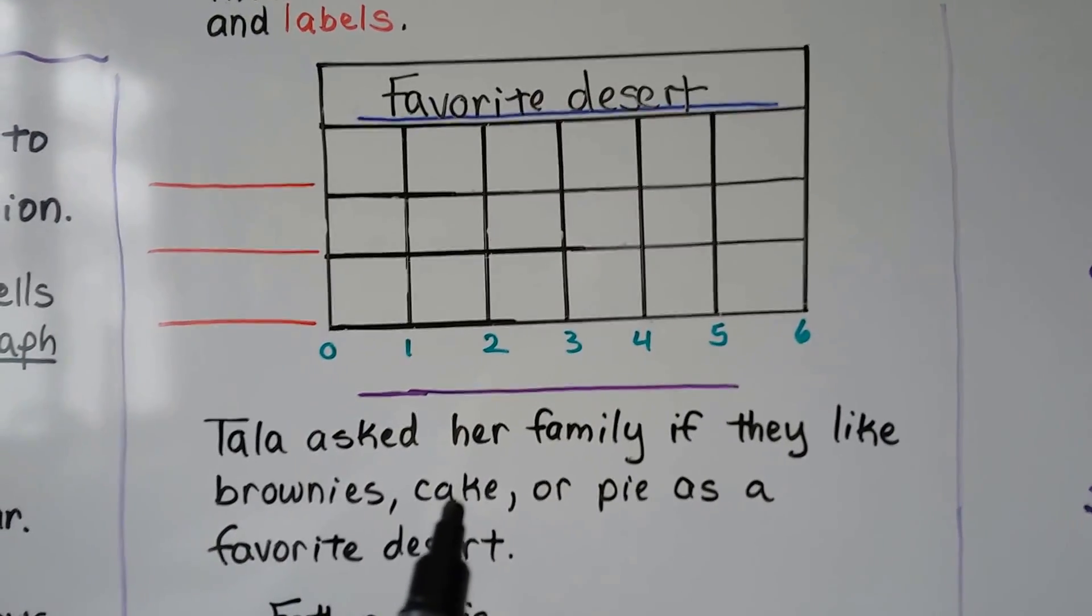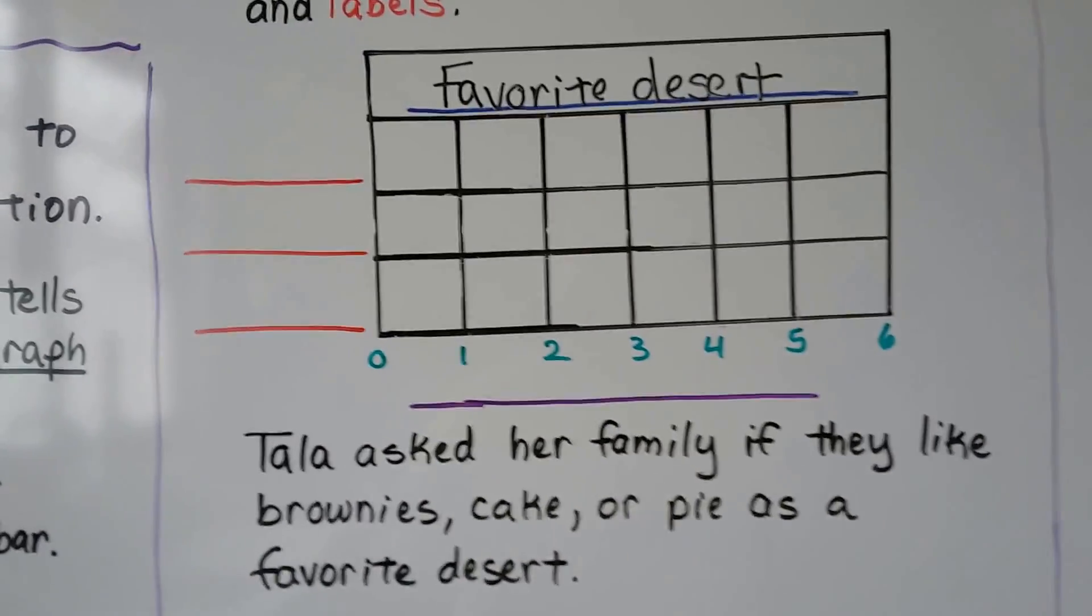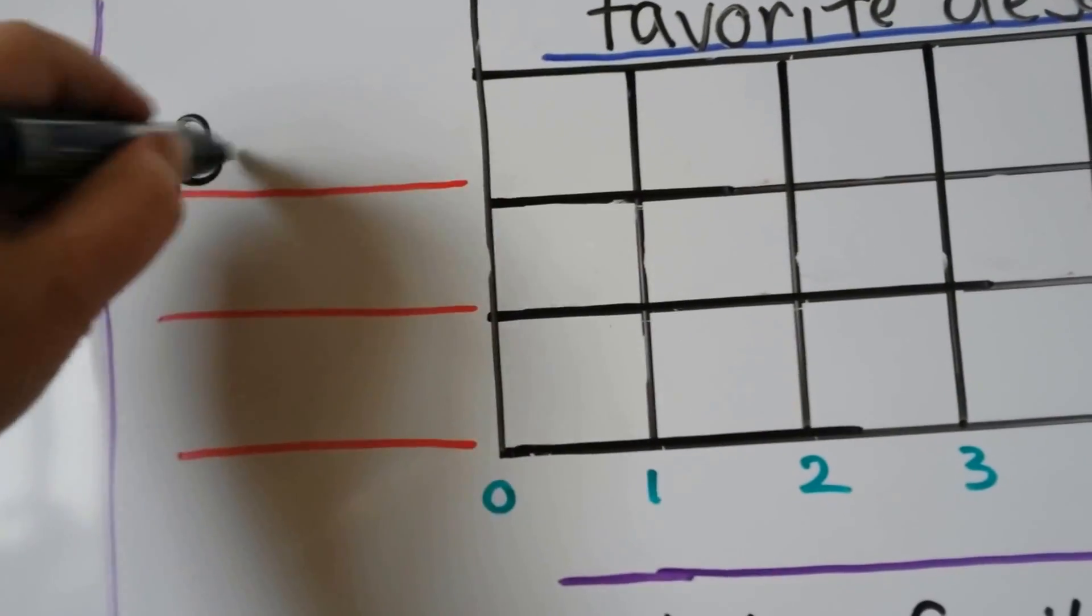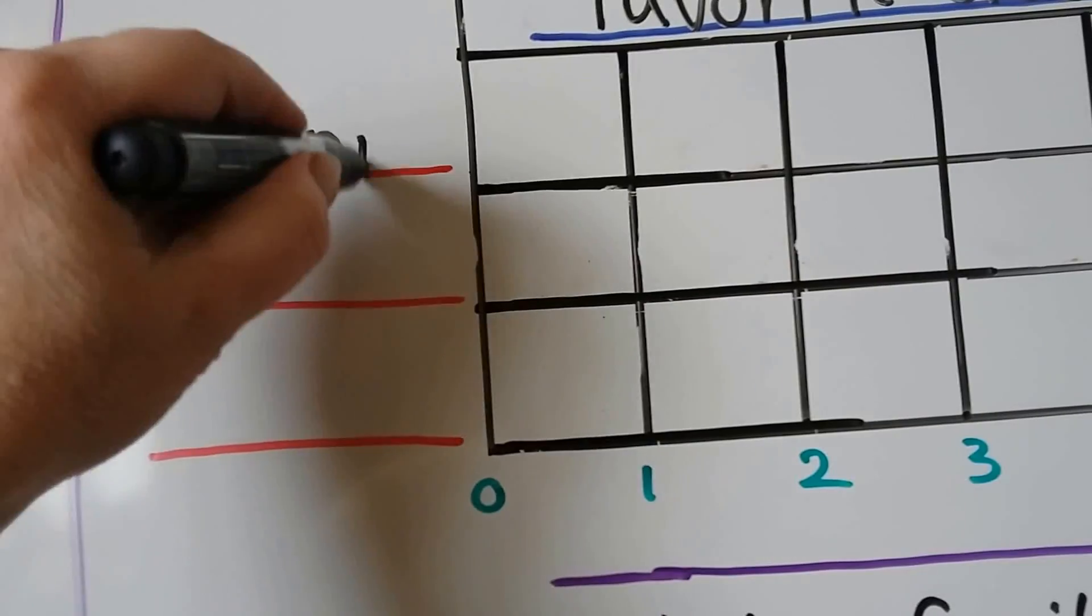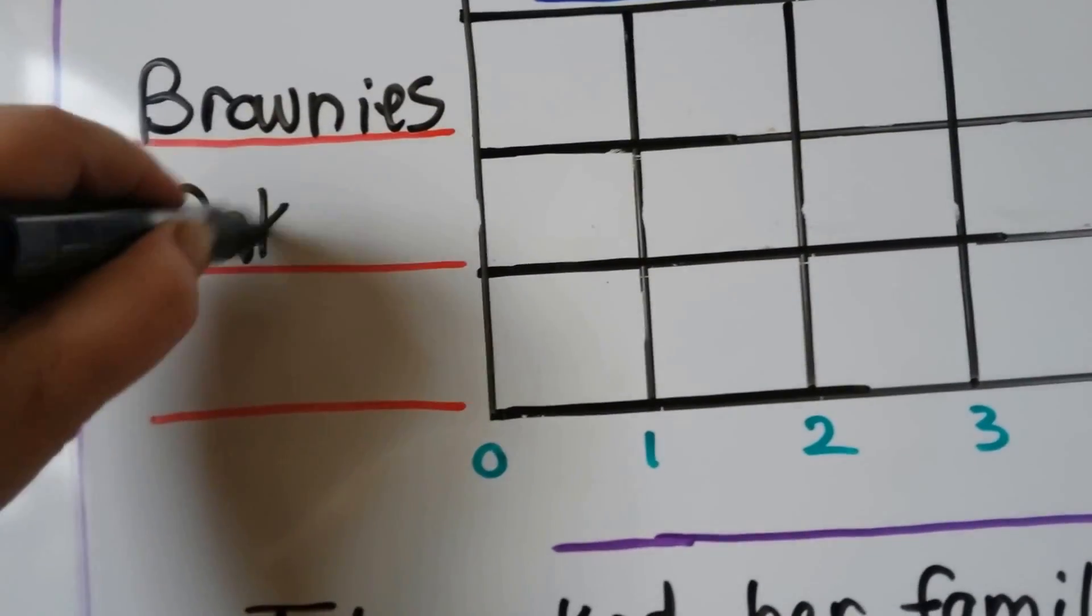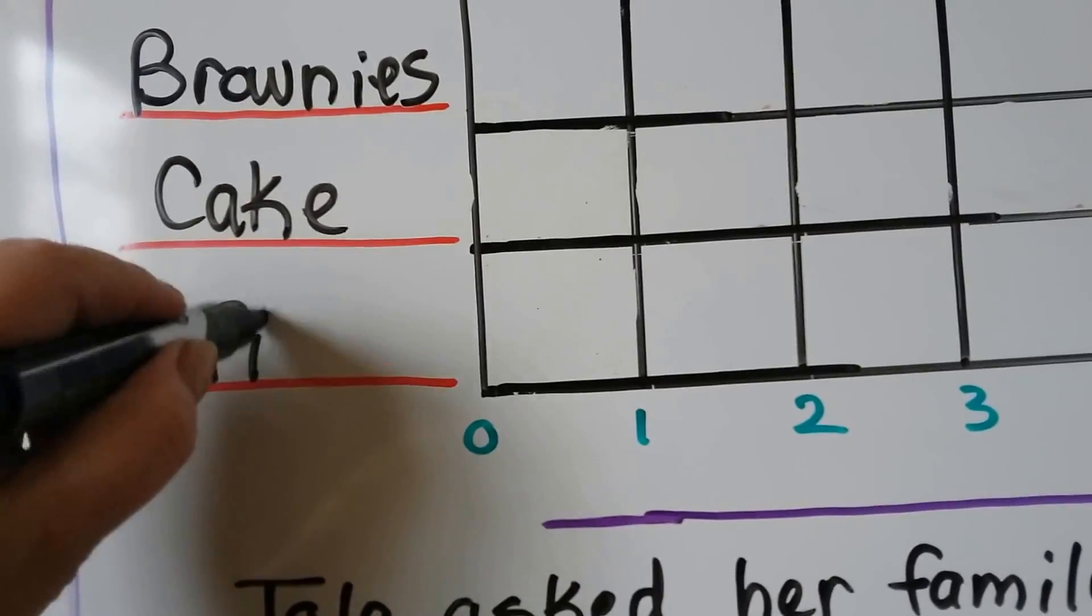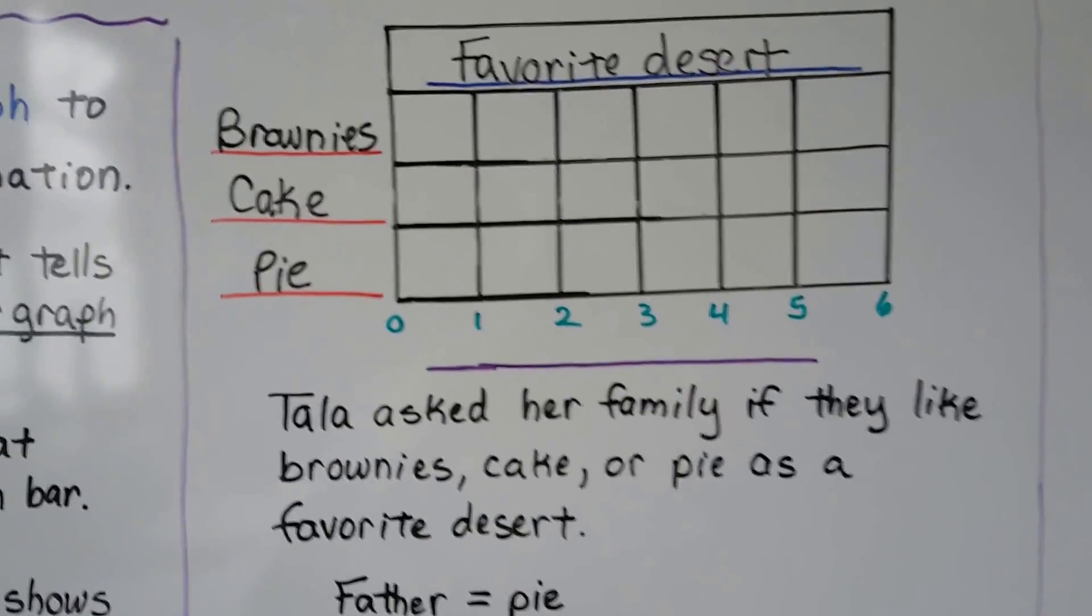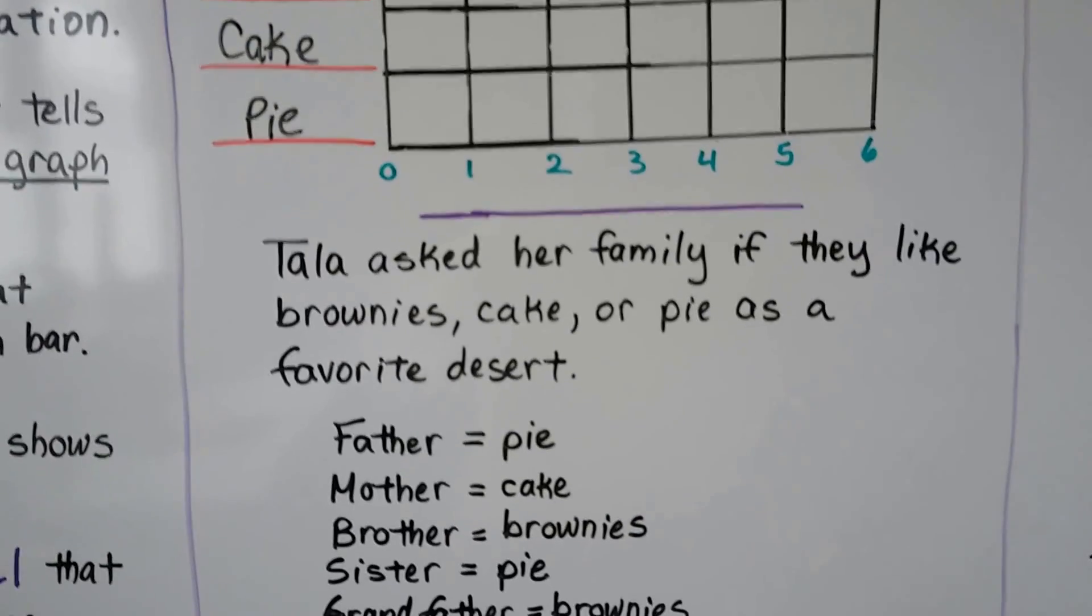She's trying to find out their favorite dessert, so we can title it Favorite Dessert. And we need our bar labels. Can you see what choices they have? There's brownies, cake, or pie. That will be our bars. We have brownies, cake, and we have pie. Those are our choices. That's our family's choices.